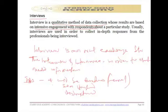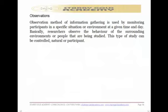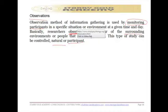Observation is another primary source of data. The observation method of information gathering is used by monitoring participants in specific situations or environments. You monitor the participants in the specific situation and environment at a given time and day. Basically, the researcher observes the behavior of the surrounding environment of the people being studied. This study can be controlled or natural observation of participants.